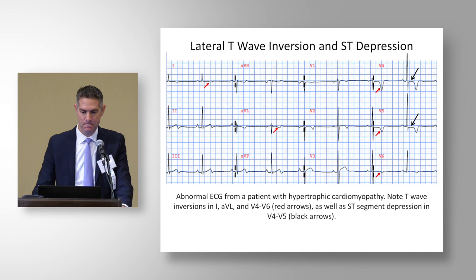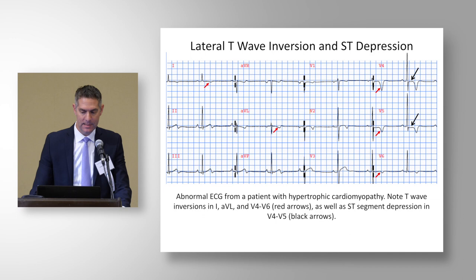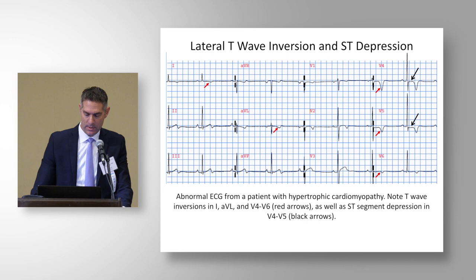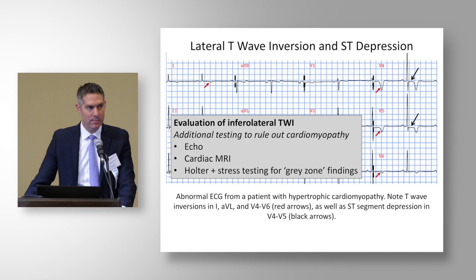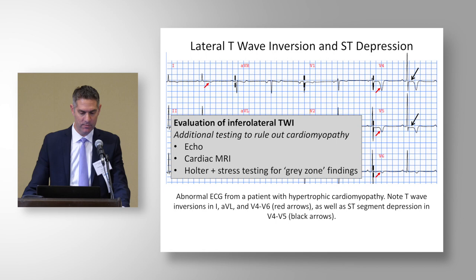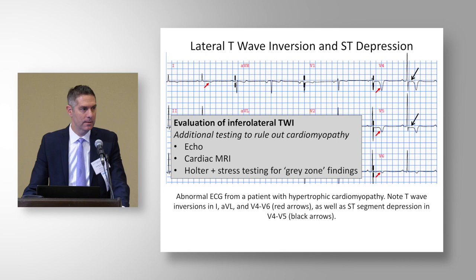Here's another example of lateral T-wave inversion and ST-segment depression — in V4, V5, V6 — showing a pretty deep T-wave inversion, defined as more than two millimeters or two small boxes. It's important to link our abnormalities to the recommended evaluation. In this ECG, the recommendation is an echocardiogram, cardiac MRI, and then for gray zone findings, ambulatory ECG monitor or Holter and cardiac stress testing.